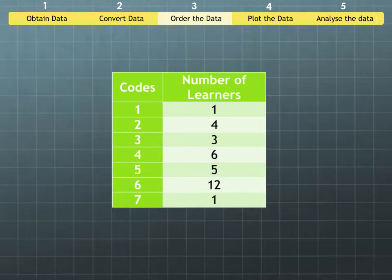For example, in this case one learner achieved a code one, four learners achieved code two, three learners a code three, six learners a code four, five learners a code five, twelve learners a code six, and one a code seven.